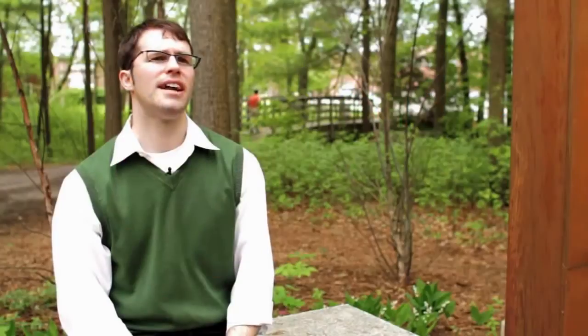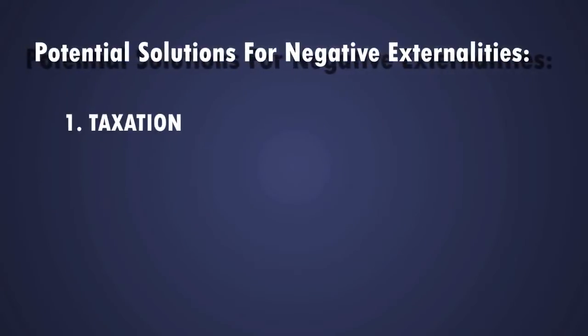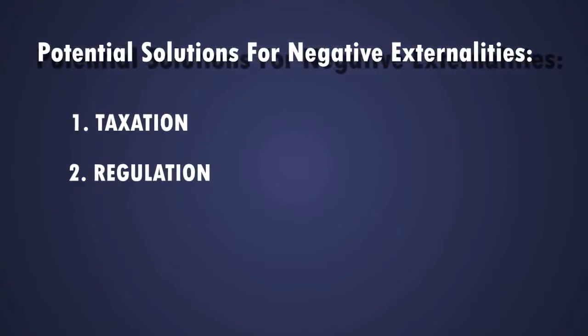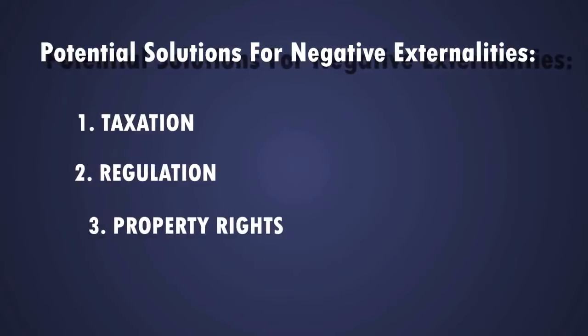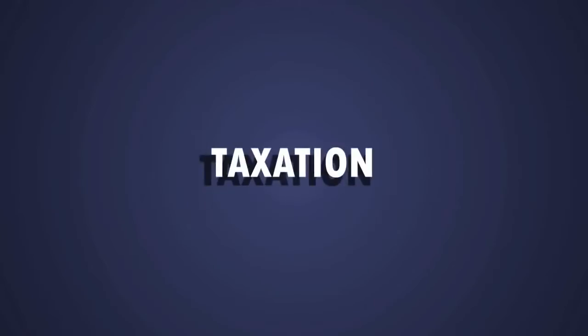There are three broad categories of ways in which we can address these externalities. The first is taxation. The second, regulation. And the third is by using property rights and the Coase theorem. Let's talk about these individually, starting with taxation.